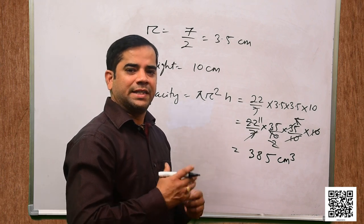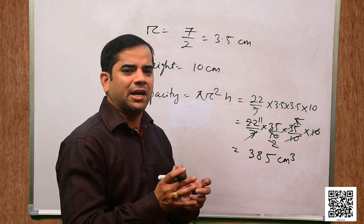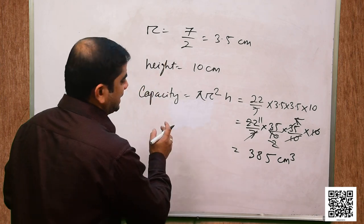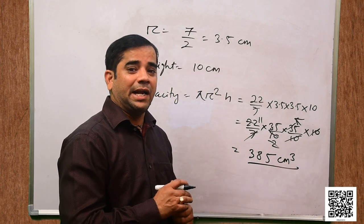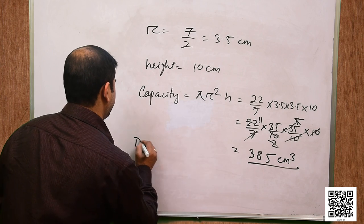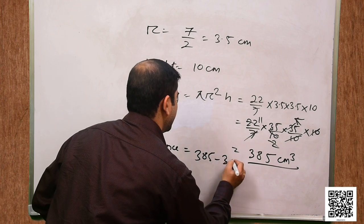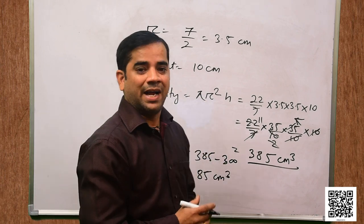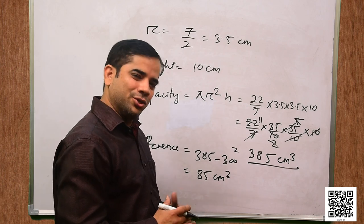The difference in capacity between the cylinder and the tin can: 385 − 300 = 85 centimeter cube. Hence the cylinder has greater capacity by 85 centimeter cube.